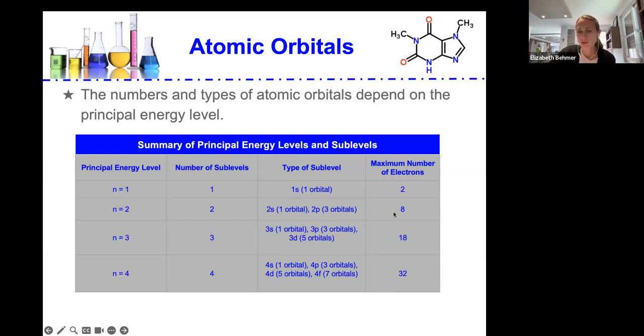In the third principal energy level, we have three sub-levels, 3s with three orbitals. We have two in each, so that's 2, 4, 6 more. So we're at 6, 7, 8 total so far.